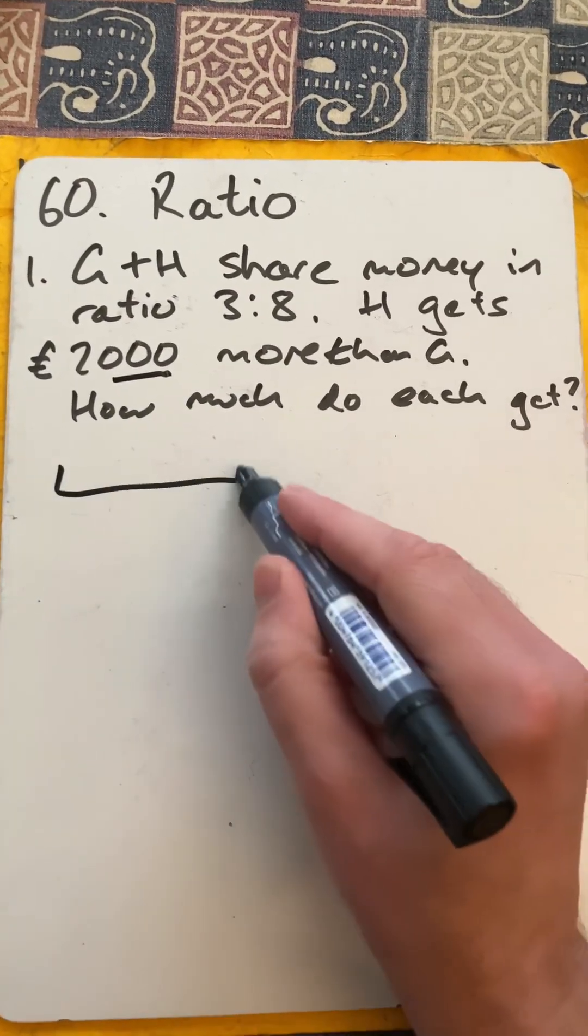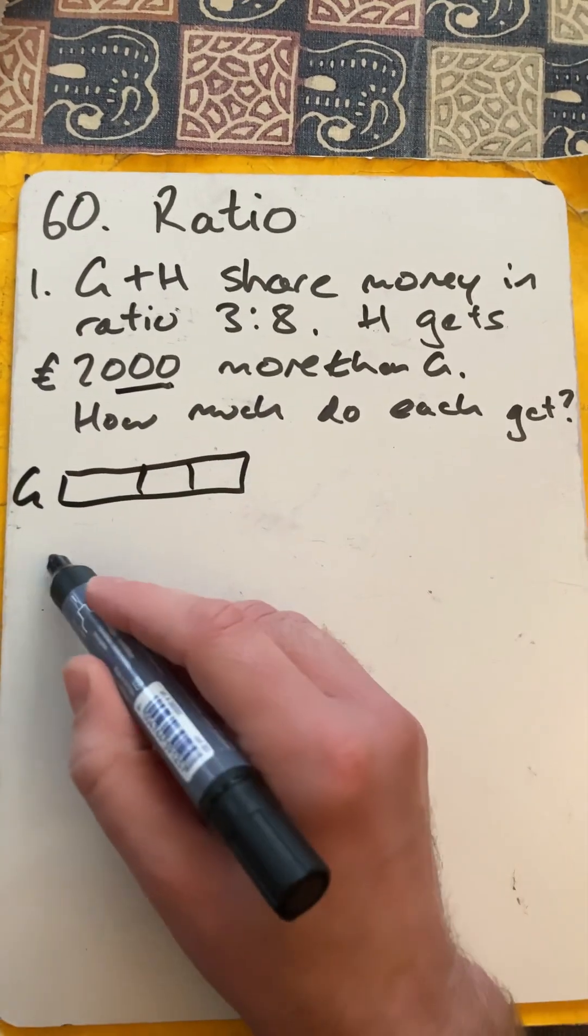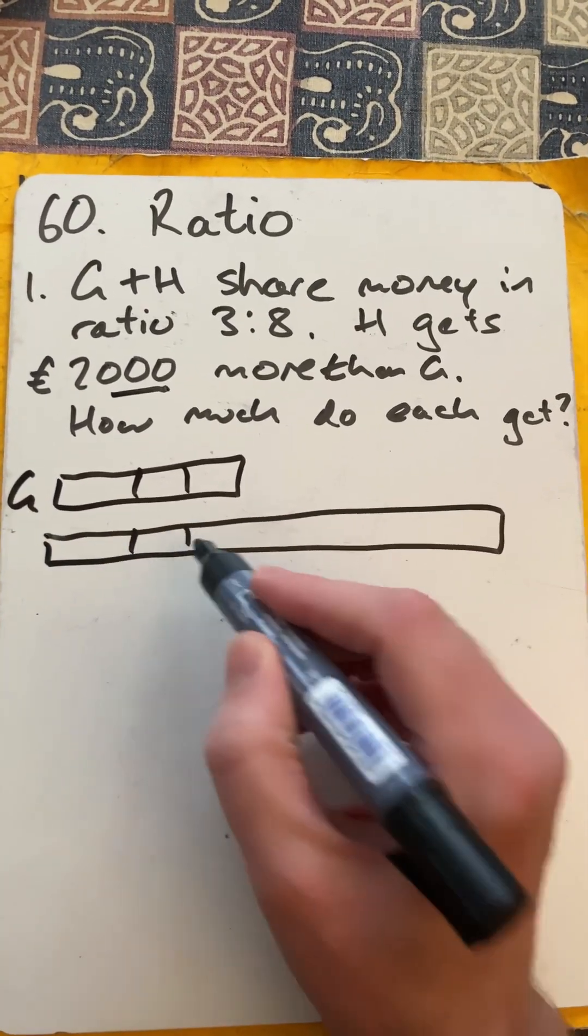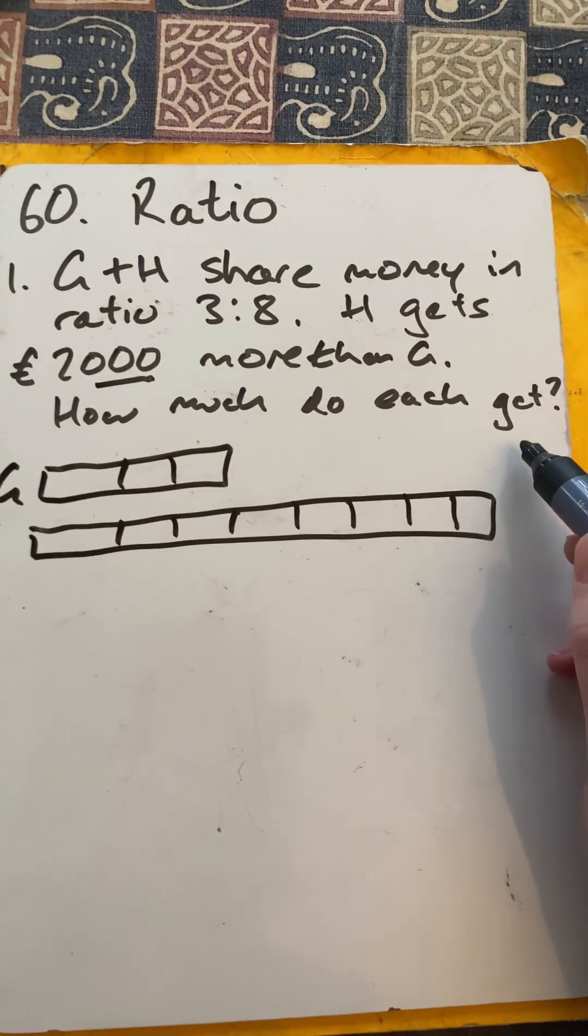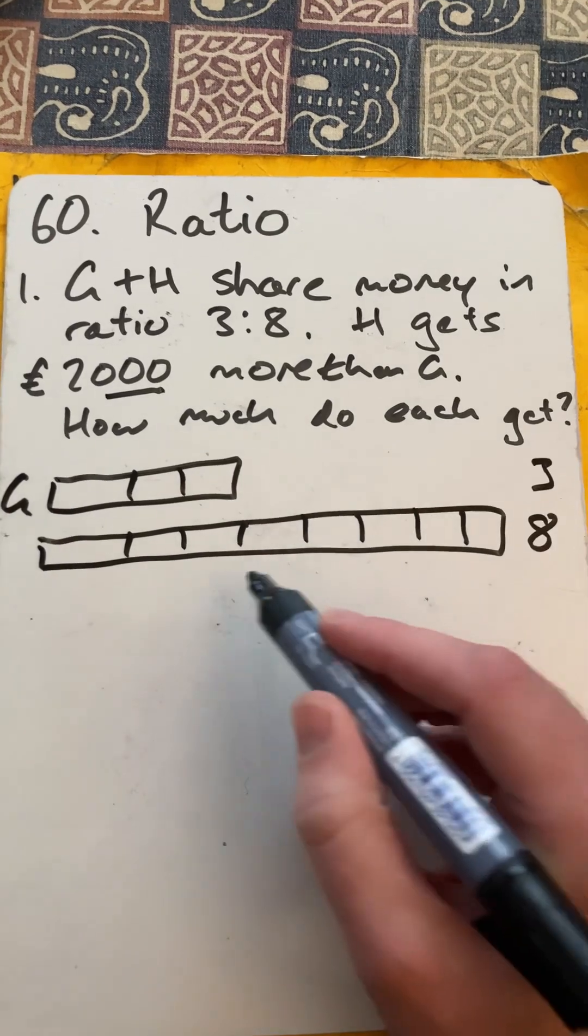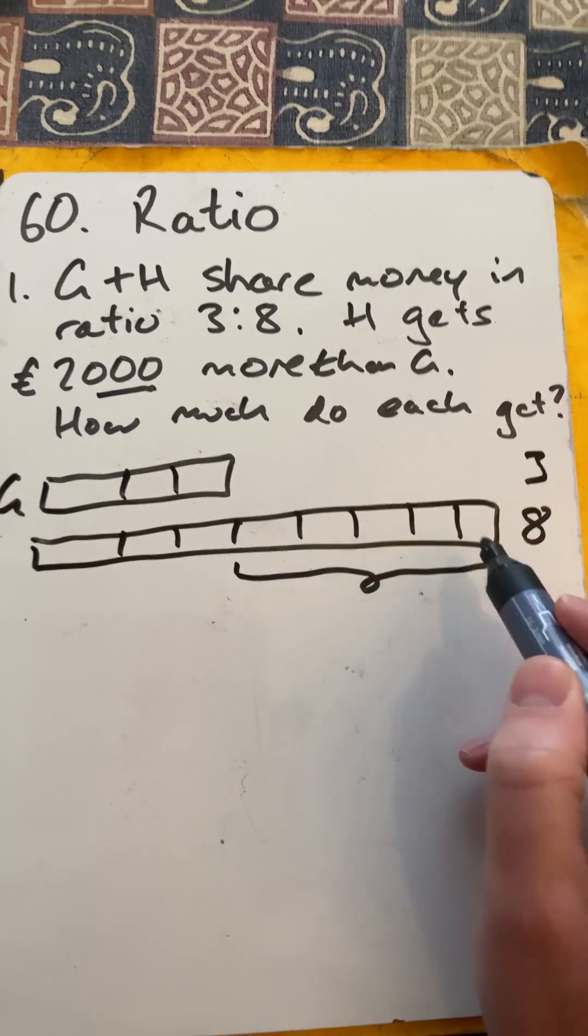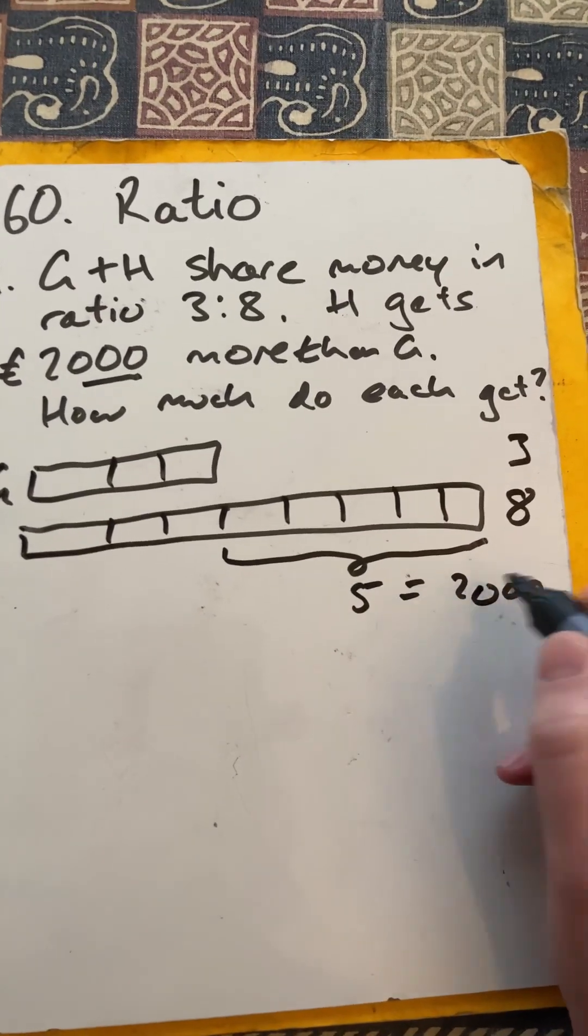So a bar model will actually help us to show this. So this is G, and let's get that to be 8, 3, 4, 5, 6, 7, 8. So that's the ratio of 3 to 8. Now the difference there is 1, 2, 3, 4, 5, and that's worth £2,000.